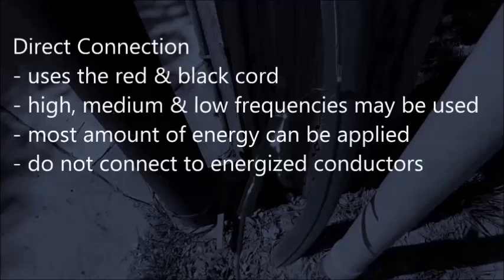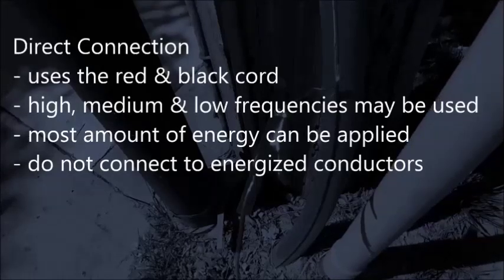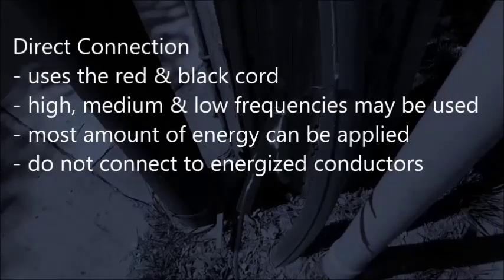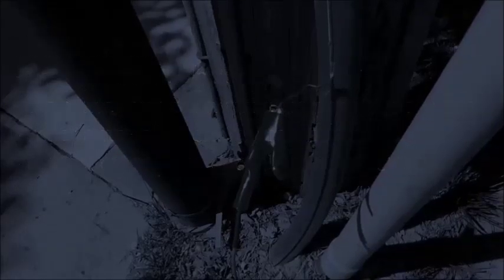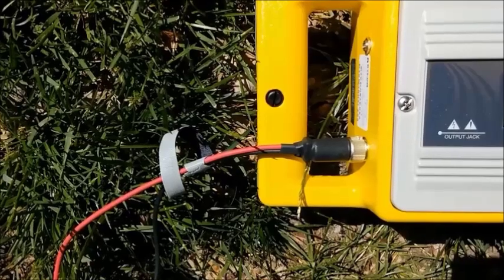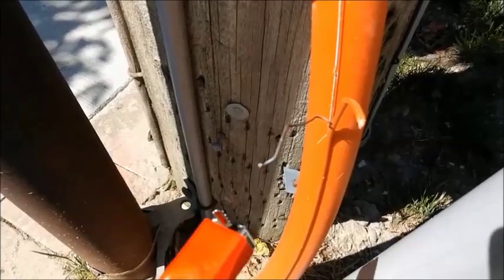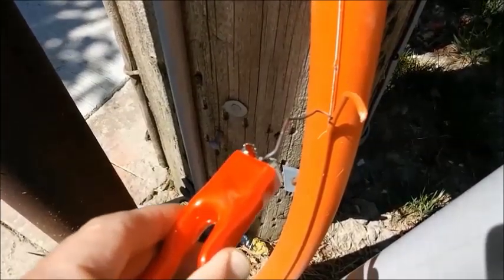Direct connection uses the red and black cord to directly conduct the locate frequency to a utility. All frequencies may be used in direct connection. To perform a direct connection, plug the red and black cord into the output jack of the transmitter. Connect the red clip to a conductive part of the target utility.